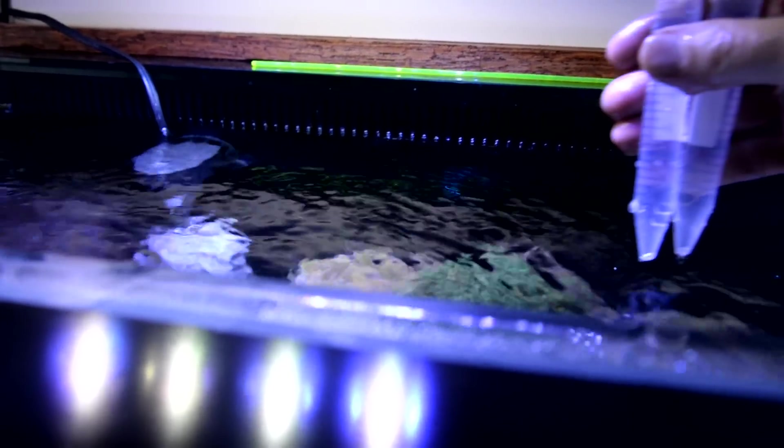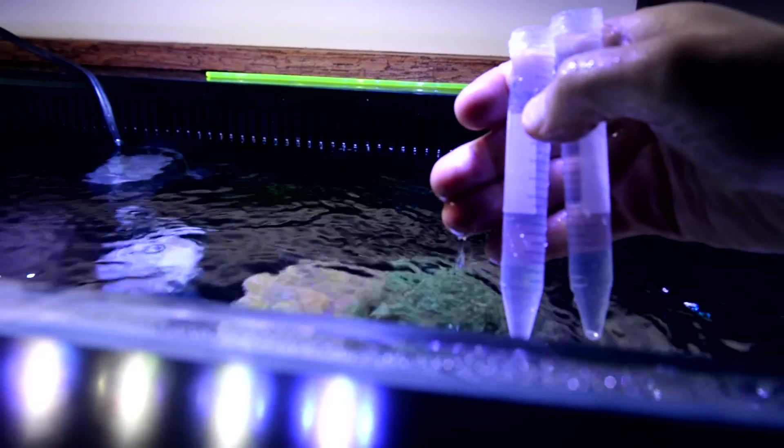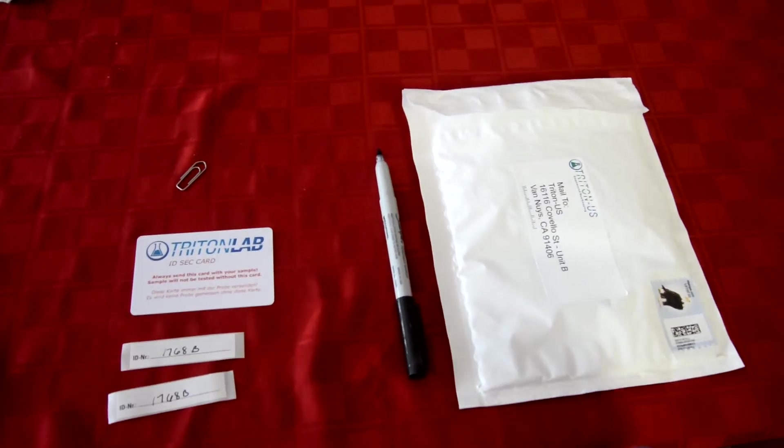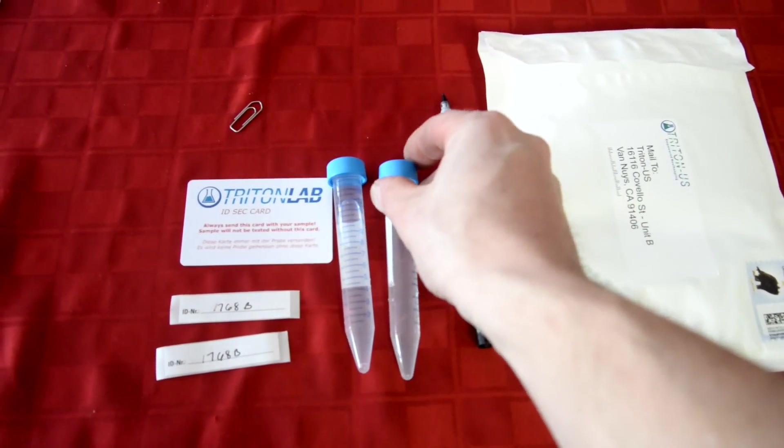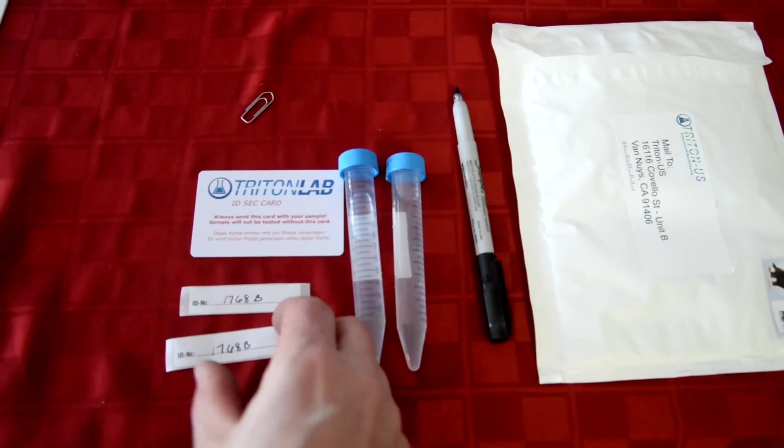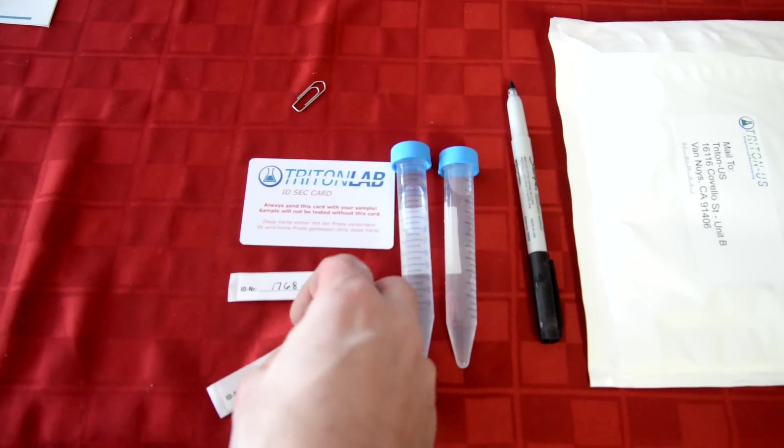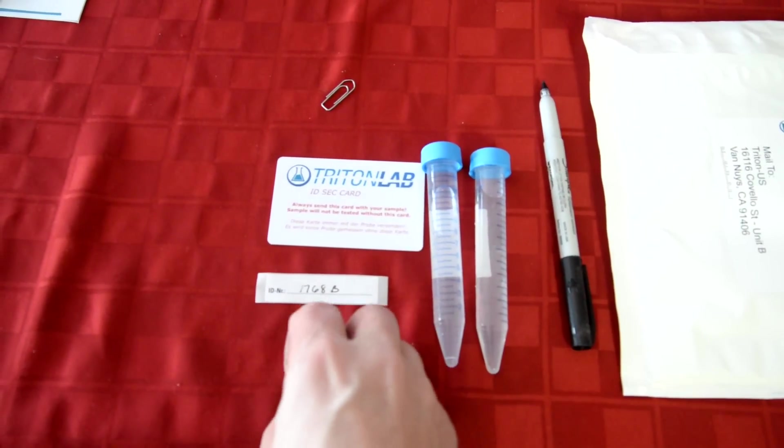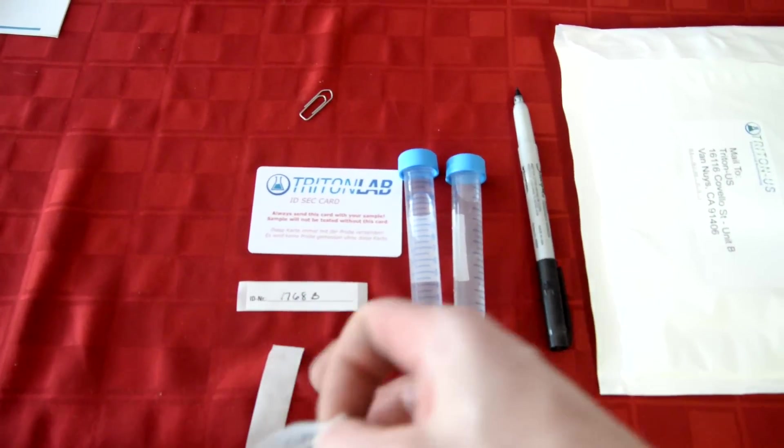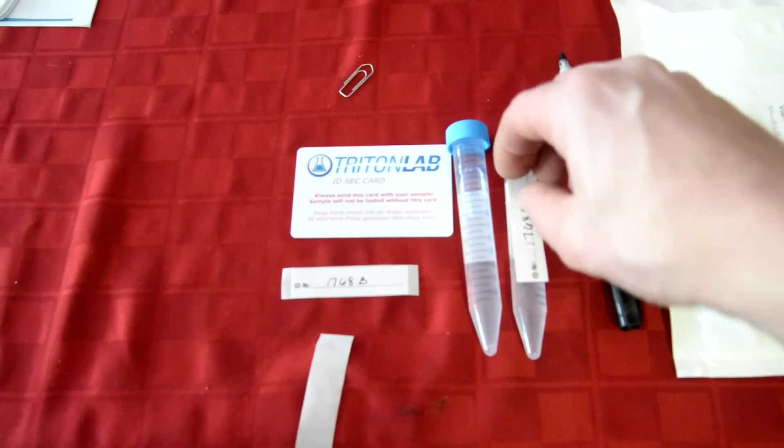Those test results I will compare to the tests that I did with my HANA checkers, my Salifert testers, and a few other testers that I did in my tank today. So I'll record those values on my computer and I'll wait for these test results to come back and I'll compare them and I'll get an idea of how accurate my testing is. Plus I get a lot more values out of the Triton test than what I ever could test for with the home test kits.